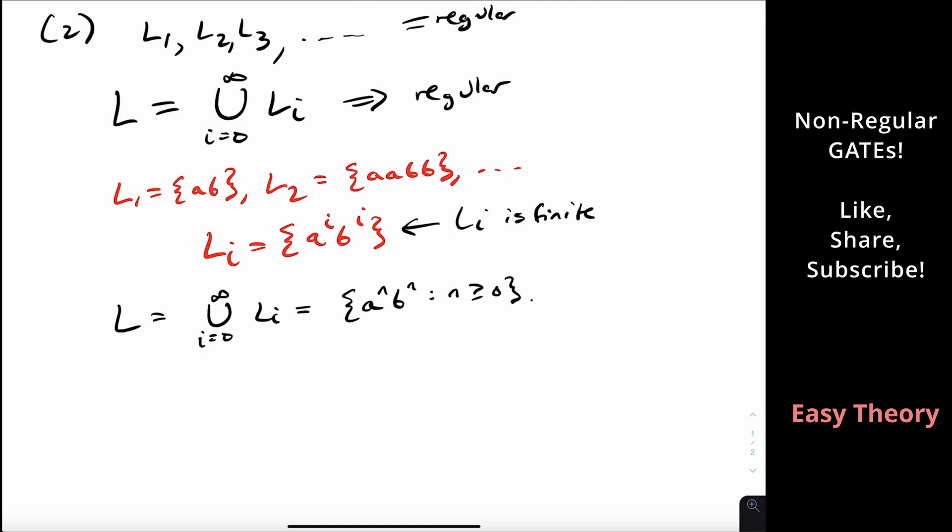Because this says that we take infinitely many languages and we're just unioning all the strings into L. Well, those are the ones that are of the form A's followed by B's with the same number of A's and B's.